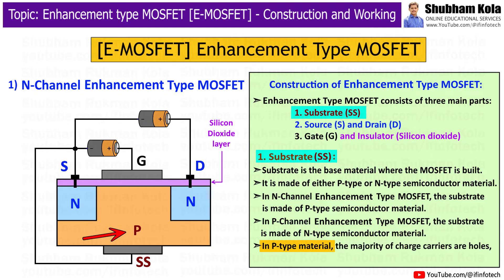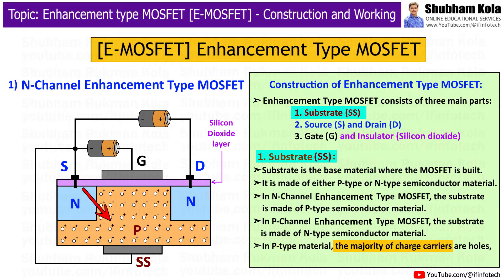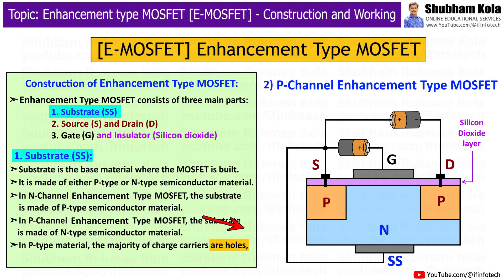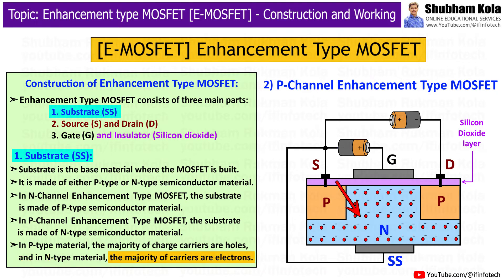In P-type material, the majority charge carriers are holes, whereas in N-type material, the majority charge carriers are electrons.